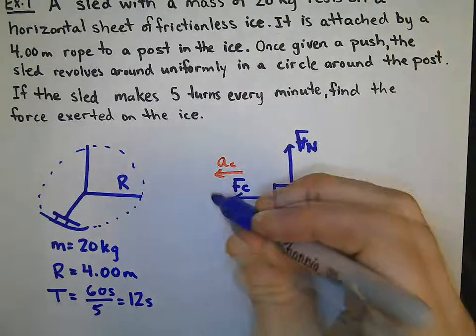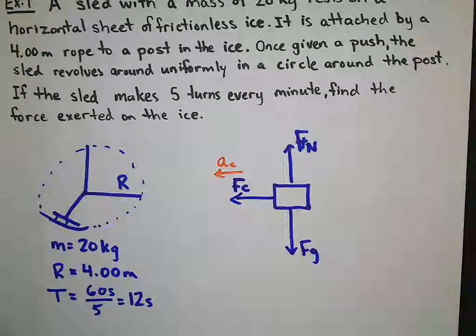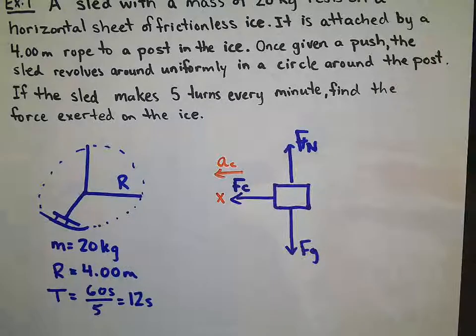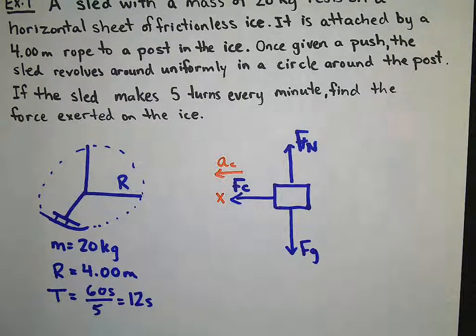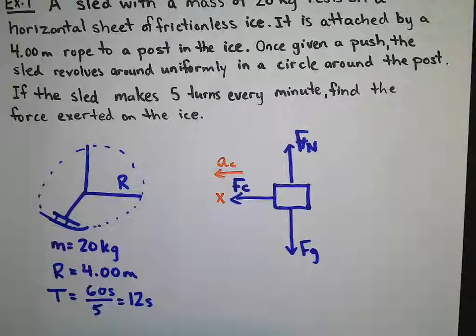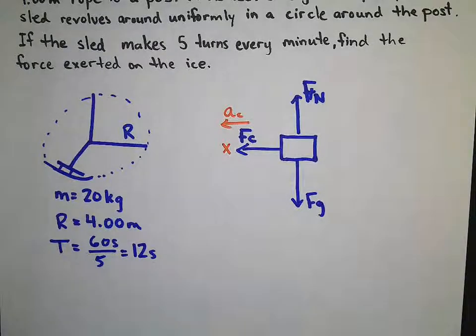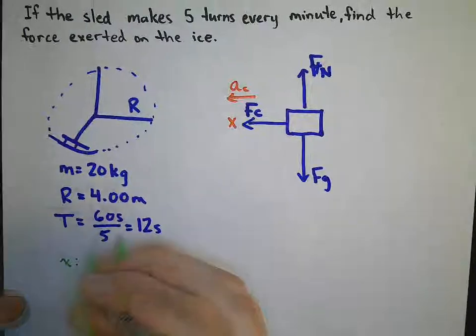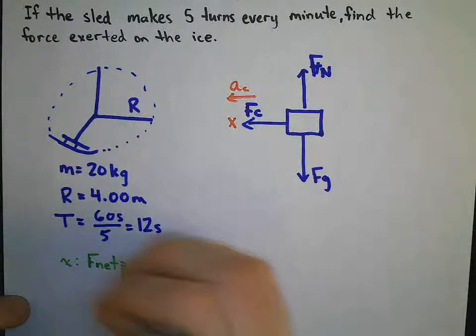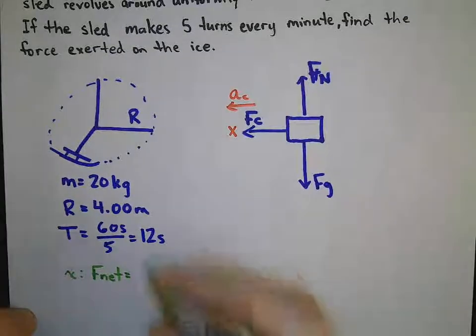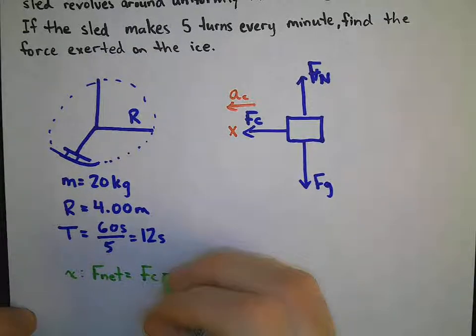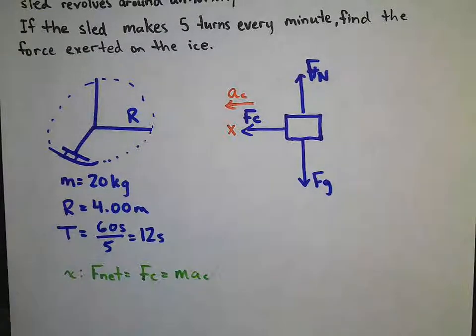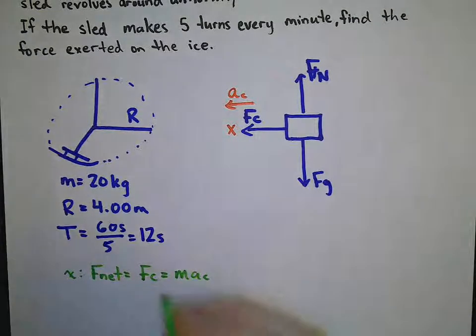So we'll call this our positive x direction towards the center. Since there is no acceleration in the y direction, this merely becomes the case in the x direction that my net force is simply the centripetal force, which is mass times acceleration, in this case centripetal acceleration.